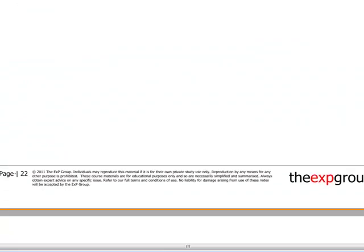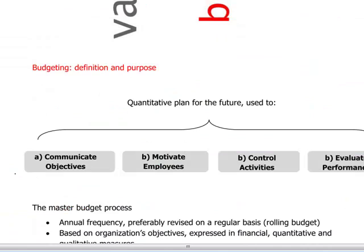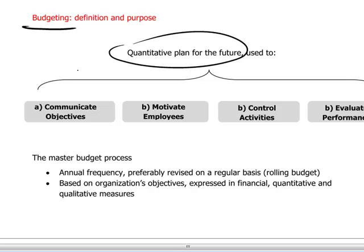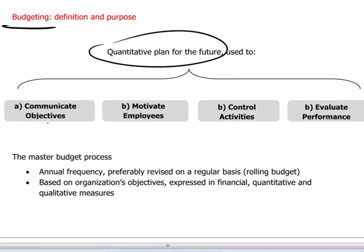We can move on to the next part of the F2 syllabus, which deals with budgeting and standard costing. A budget is simply a quantitative plan for the future. Budgets are used as a planning device for companies' activities. In addition, they communicate the objectives of the company, and budgetary targets hopefully motivate employees to perform well. Budgets are also a way of exerting control within the business — control over expenses and activities. At the end of the period, the company can look back over performance achieved, evaluate it, and reward good performance through bonuses, promotions, and so on.